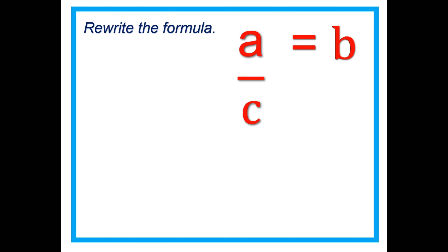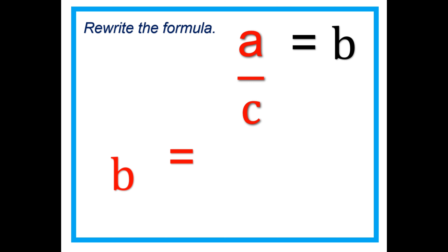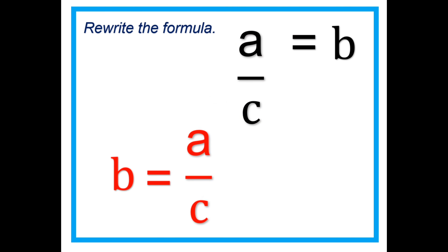Just like this — bring down A over C. The answer is B equals A over C. That's it.